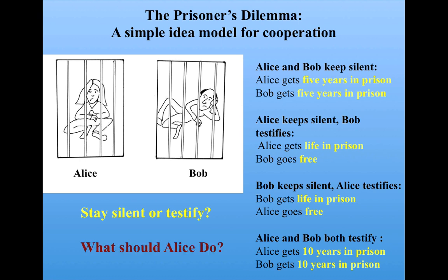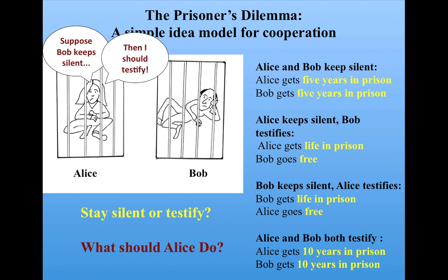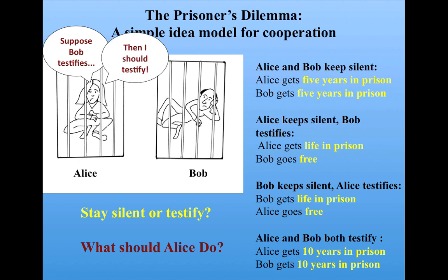What would you do if you were Alice? Here's how Alice's thought process might go. Suppose Bob keeps silent — if she keeps silent, she'll get five years in prison, but if she testifies, she gets off scot-free, so she should clearly testify. Now suppose Bob testifies — if Alice keeps silent, she gets life in prison, but if she testifies, she gets ten years, which is better than life. So she should testify in that case as well.